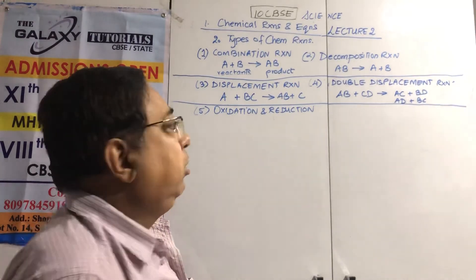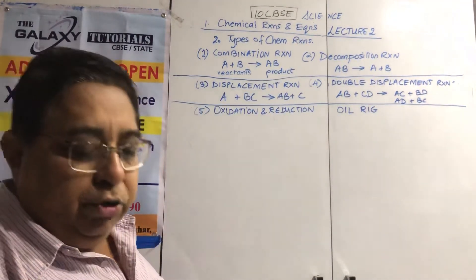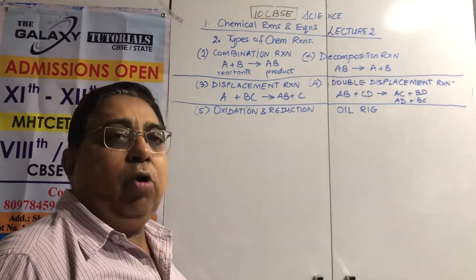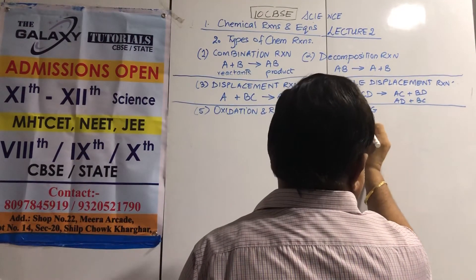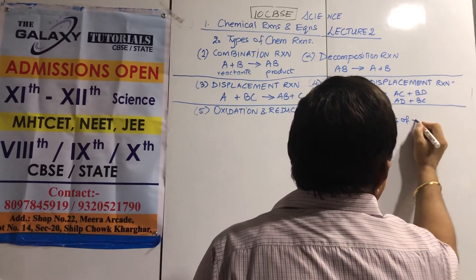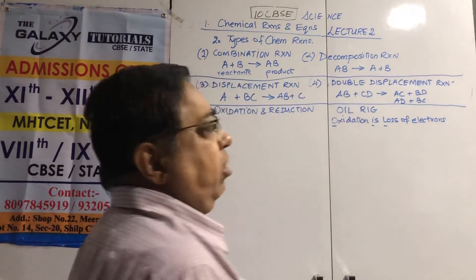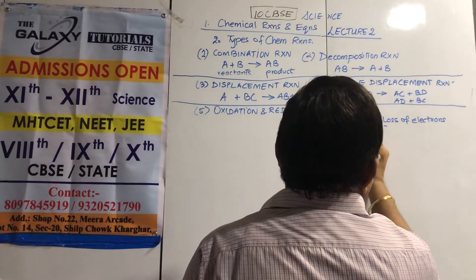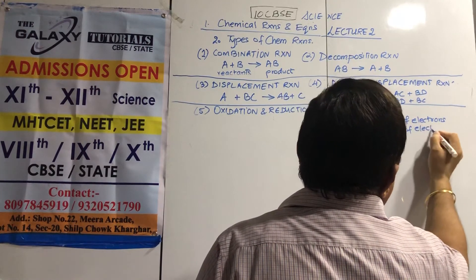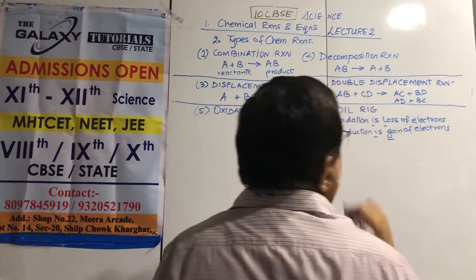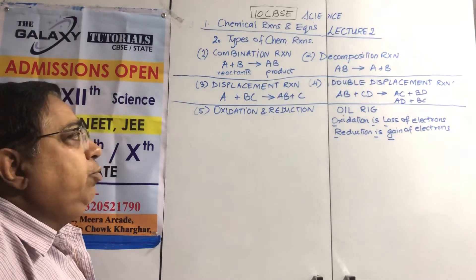Who is oxidized, who is reduced? Remember the simple mnemonic OIL RIG — like an oil rig drilling in the ocean. Oxidation Is Loss of electrons; Reduction Is Gain of electrons. If you forget, just write OIL RIG on your answer sheet and you're ready.